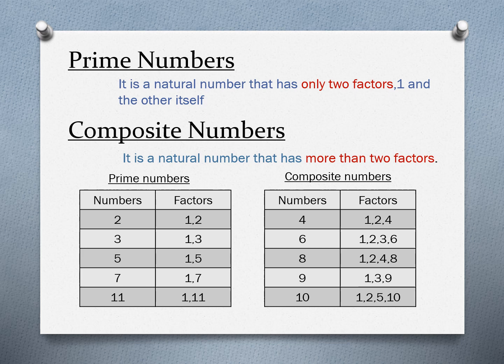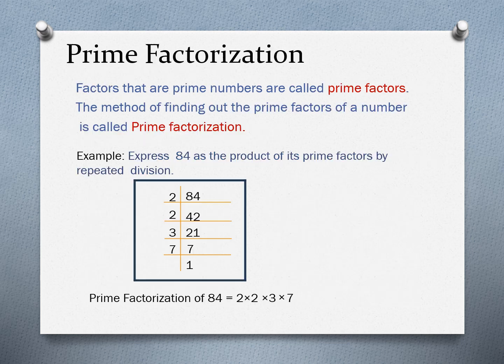Eleven has factors of 1 and 11 — one and itself. Now look at the examples of composite numbers: factors of 4 are 1, 2, and 4; factors of 6 are 1, 2, 3, and 6; factors of 8 are 1, 2, 4, and 8; factors of 9 are 1, 3, and 9; factors of 10 are 1, 2, 5, and 10. These are examples of prime numbers and composite numbers.